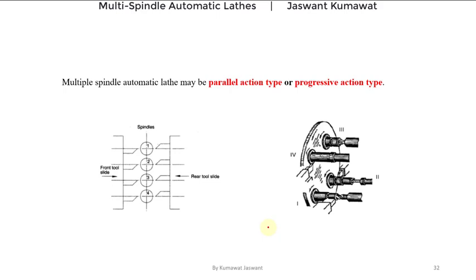Multi spindle automatic lathes may be of parallel action type or progressive action type. In the parallel action type, the spindles are arranged in a vertical direction — that means the axes of these spindles are parallel to each other. In the progressive action type, the spindles are arranged equidistantly in a circle, as seen in the diagram shown earlier. We will study both types in the coming virtual classes, and you can find the related videos in the description box.